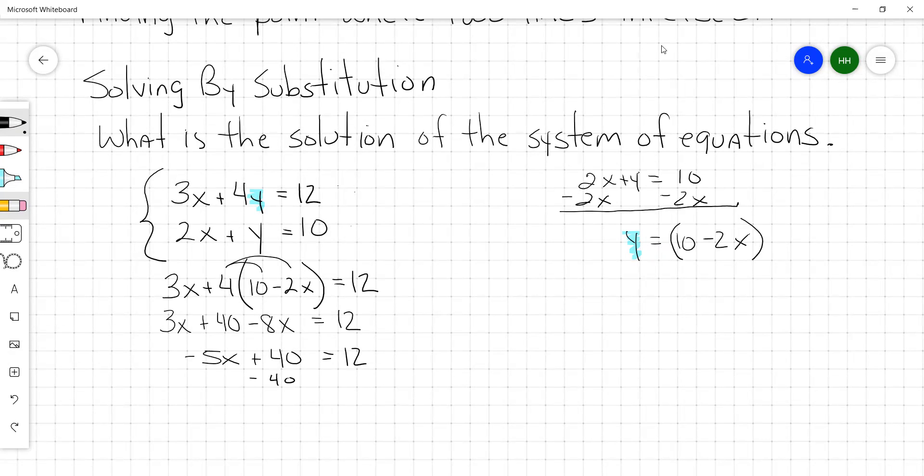You can subtract 40. We're going to get negative 5x equals 12 minus 40, negative 28. Divide by negative 5 and we're going to get an x value that's equal to 28 divided by 5.